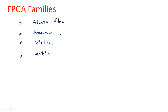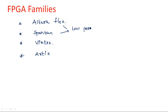So these are the different logic families we are going to study: Alteraplex, Spartan, Vertex, and Artix. The major difference among these four different FPGA families is that Alteraplex and Spartan are laboratory-purpose or low-performance FPGA families. Alteraplex family and Spartan family are low-end processing, low-performance families.